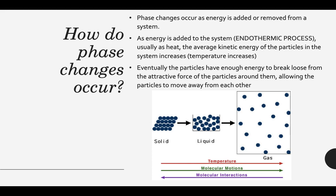When heat is absorbed by the system, it speeds up the particles — heat them up, speed them up. So the average kinetic energy of those particles increases and it gets warmer as it absorbs heat. Eventually those particles have enough kinetic energy to move away from each other. They can actually break from the attractive force of particles around them, overcome those intermolecular forces, and move more freely. This causes solids to break those strong intermolecular forces and those particles can move past each other into the liquid phase.